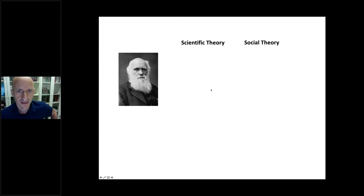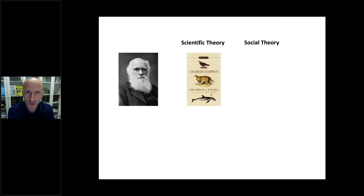Let's start with Charles Darwin. Most of us are familiar with his theory of evolution and how it works. In Darwin's theory, there were certain terms and concepts that were the engines of the evolutionary process, among them the most familiar ones: the idea of competition, struggle, and survival of the fittest.